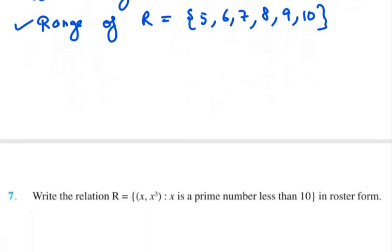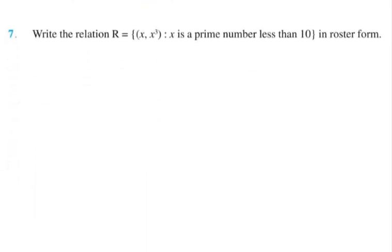Question number 7 is write the relation R = {(x, x³) : x is a prime number less than 10}. So we need to write the relation here in roster form.